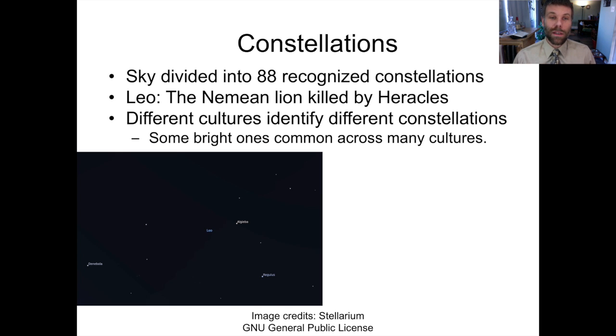So here is the constellation Leo as seen on the sky. This is a rendering from a free planetarium software called Stellarium, which I periodically use to conduct demonstrations or to carry out labs. And if you just look at the stars without any of the guiding features, it might be really hard to tell yourself, oh, well, clearly this is a lion.